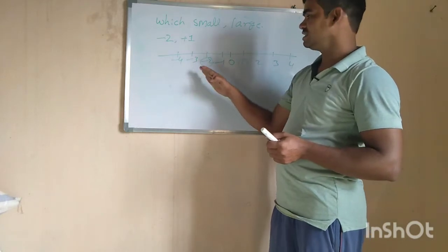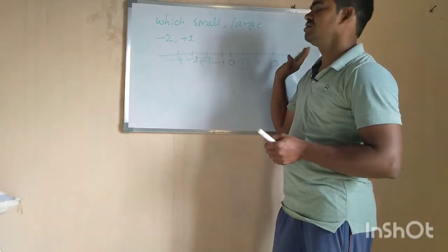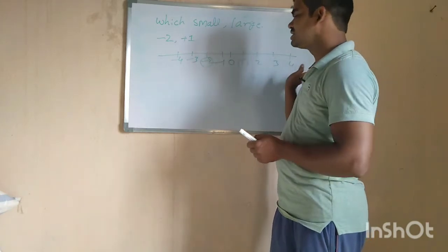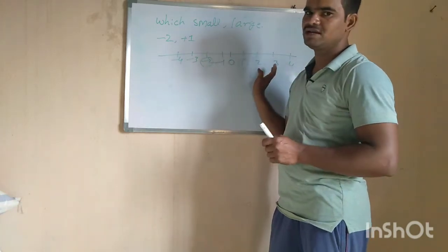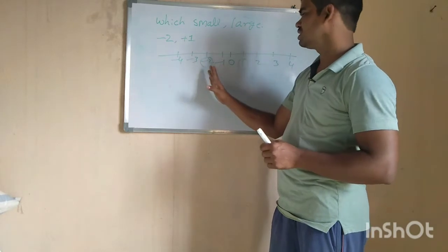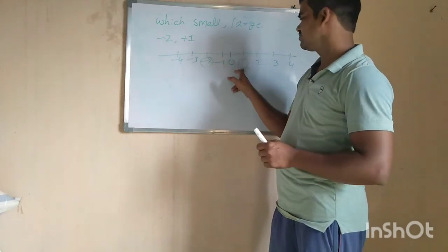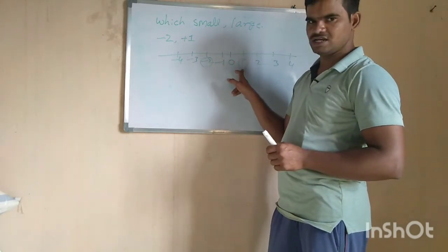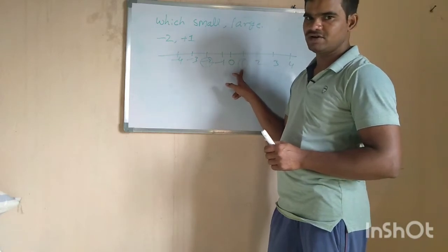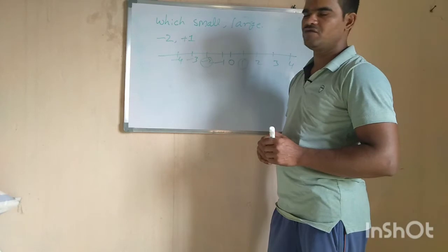Remember one thing: when we represent the given numbers on the number line, whichever is on the right side is the greater one. So now check — minus 2 is here and plus 1 is to the right of minus 2. So 1 is the greater one and minus 2 is the smaller one.